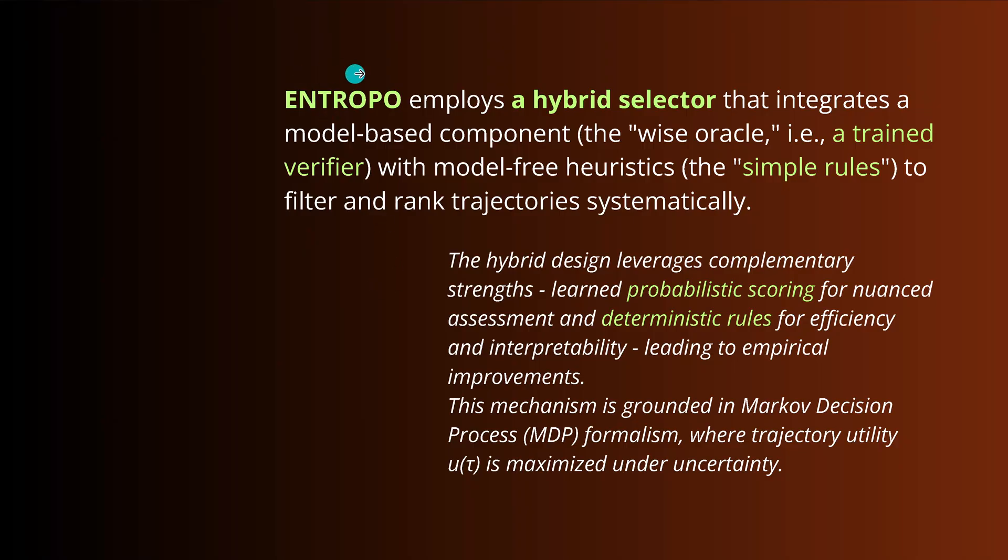Anthropo employs a hybrid selector. This is interesting. Whenever you're not really sure how to go, you take a little bit of this one and take a little bit of this one. And then you say, okay, let's build a hybrid solution. This is what happened here. It is great. And you guessed it. The first solution is, of course, an AI intelligence. And the second solution is a simple rule based where you say, okay, this is my heuristic rules that the system applies. Nothing specific. We have a probabilistic scoring and we have deterministic rules for the efficiency and interpretability leading, and this is the big question, to empirical improvements. Let's have a look at this.